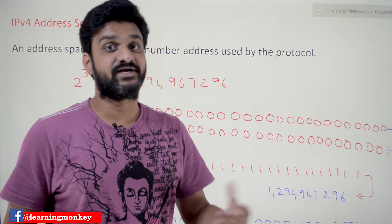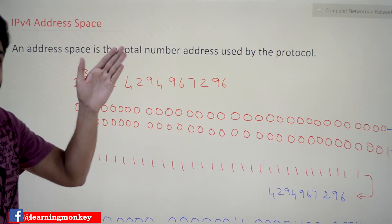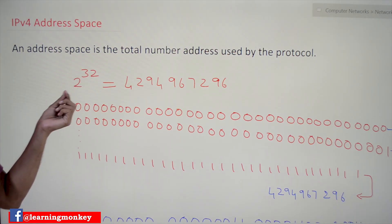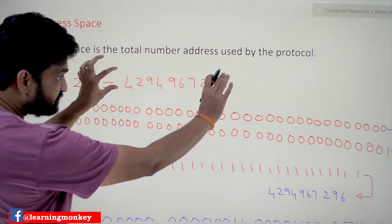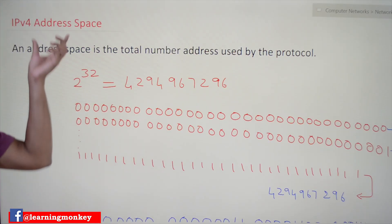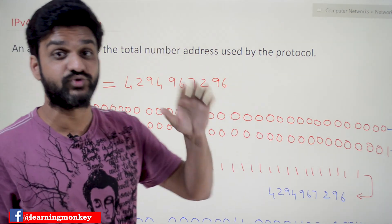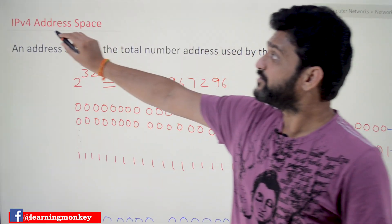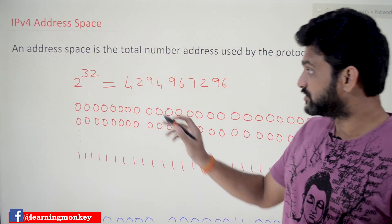Address space means the total number of addresses that are possible with IPv4. With 32 bits, how many unique numbers are possible? The unique numbers possible are 2 to the power of 32. This means more than 4 billion unique IP addresses are possible with IPv4.